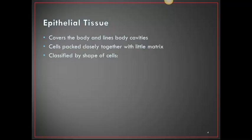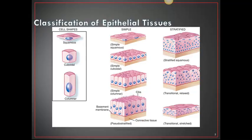Cells can also be arranged in different orientations. There is simple, which is a single layer of cells, and stratified, which is many layers of cells. On this slide you can see the different shapes and orientations: squamous, cuboidal, and columnar — each in simple (one single layer) or stratified (multiple layers).